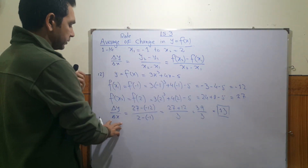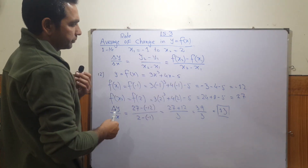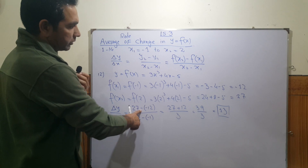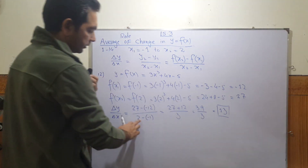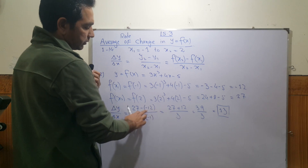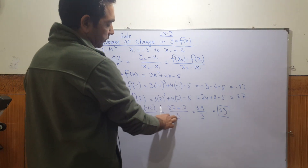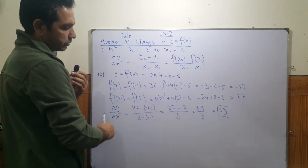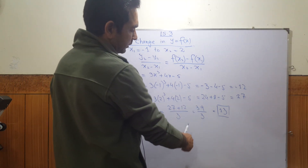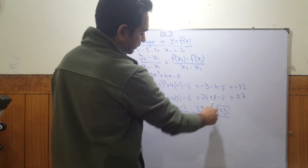Substituting into the formula: (27 - (-12)) divided by (2 - (-1)) = (27 + 12) divided by 3 = 39 divided by 3 = 13. So the average rate of change is 13.